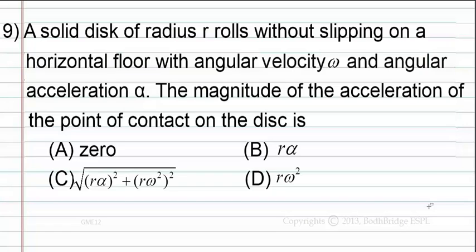A solid disk of radius r rolls without slipping on a horizontal floor with angular velocity omega and angular acceleration alpha. The magnitude of the acceleration of the point of contact on the disk is: Option A: 0, Option B: r alpha, Option C: root of r alpha square plus r omega square whole square, Option D: r omega square.